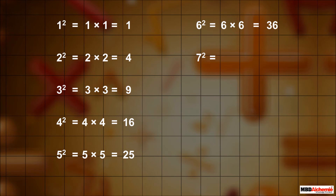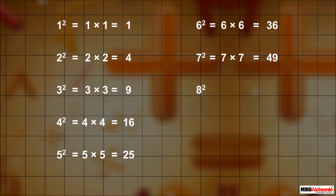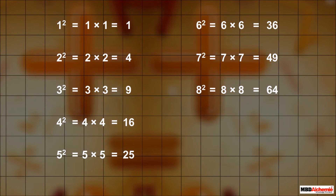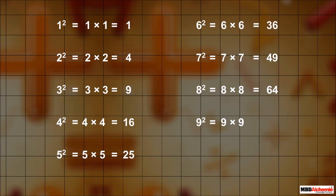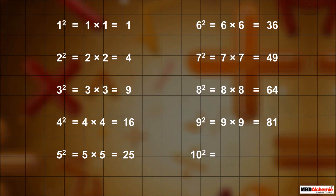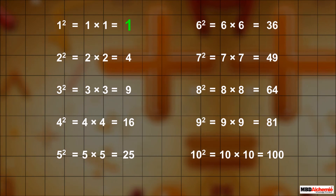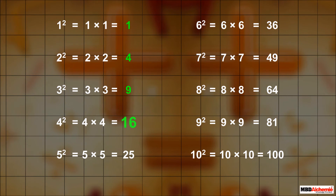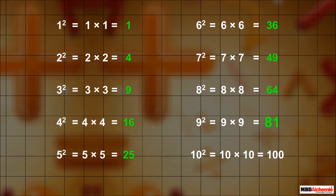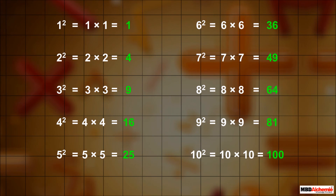The square of 7 is written as 7 into 7, which is equal to 49. The square of 8 is written as 8 into 8, which is equal to 64. The square of 9 is written as 9 into 9, which is equal to 81. The square of 10 is written as 10 into 10, which is equal to 100. Numbers such as 1, 4, 9, 16, 25, 36, 49, 64, 81, and 100 are special numbers, as these are the product of a number by itself.